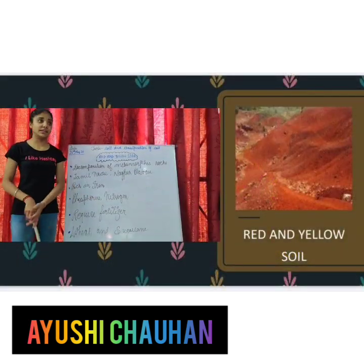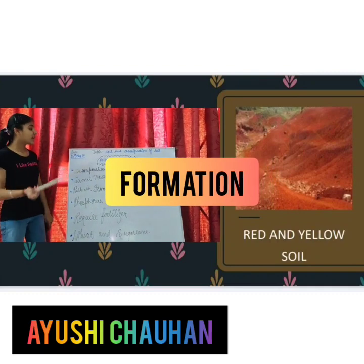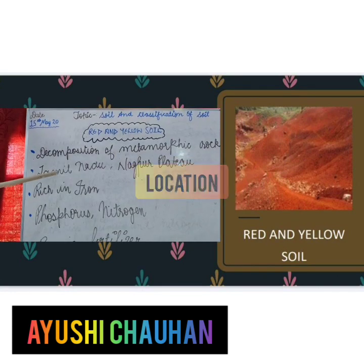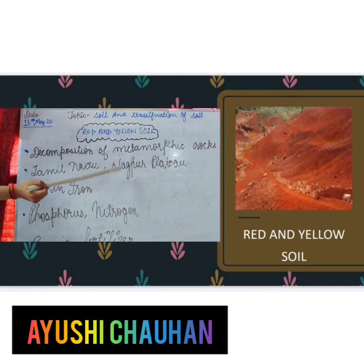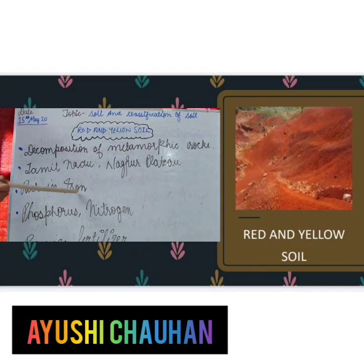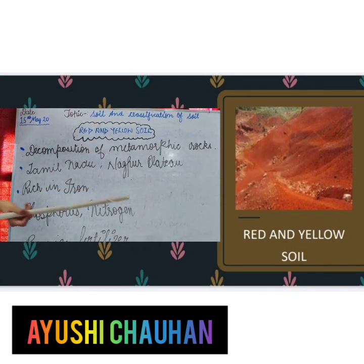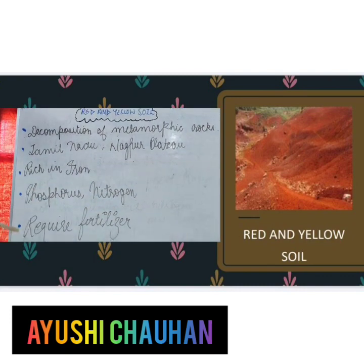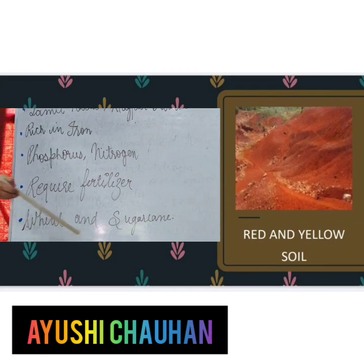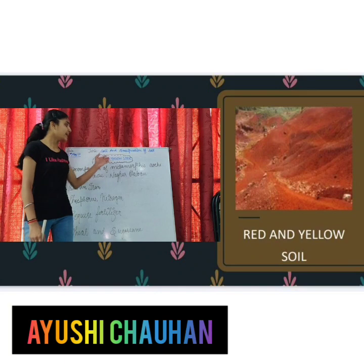Our next soil is red and yellow soil. Formation: decomposition of metamorphic rock. Location: it is found in Tamil Nadu and the Nagpur plateau. Main content: rich in iron. Deficient content: phosphorus and nitrogen. Main feature: requires fertilizer. Crops associated: wheat and sugarcane. This is all about red and yellow soil.